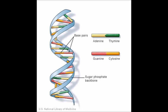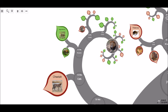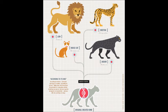DNA is able to tell us that the lion is most closely related to the leopard, less related to the jaguar, then the tiger, snow leopard, clouded leopard, marbled cat, and so on.